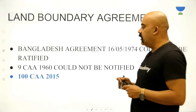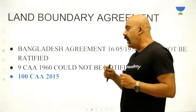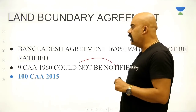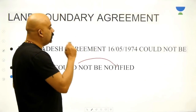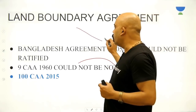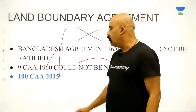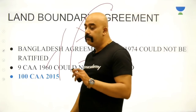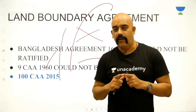After Berubari came the land boundary agreement issue. The Ninth Constitutional Amendment could not be fully notified for various regions of Bangladesh — then East Pakistan. We also had an exchange of enclaves agreement on 16th May 1974, but due to political hassles that agreement was not ratified. Therefore the 100th Constitutional Amendment Act 2015 had to be passed — that is what is called the Land Boundary Agreement or LBA with Bangladesh. The key point: there is a difference between separation of territory and ceding of territory.